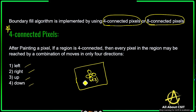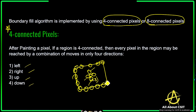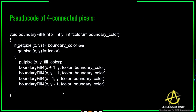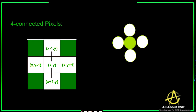We need to check the neighboring pixels, and if the neighboring pixel is not equal to the fill color or the boundary color, try to fill it with the fill color. Boundary color means whatever color is present on the boundary of the polygon. Fill color means the color present inside the polygon. Now let's see the pseudocode of the four-connected pixel so you can get complete clarity on how we are going to draw this pixel.